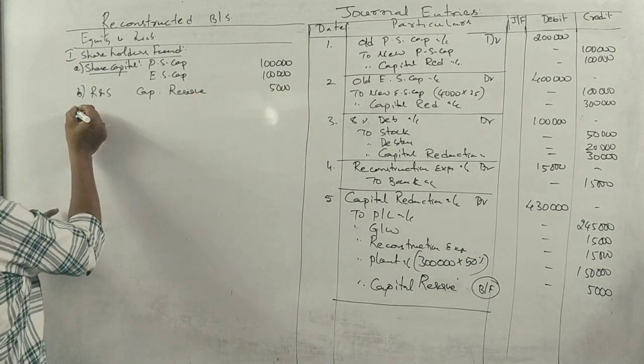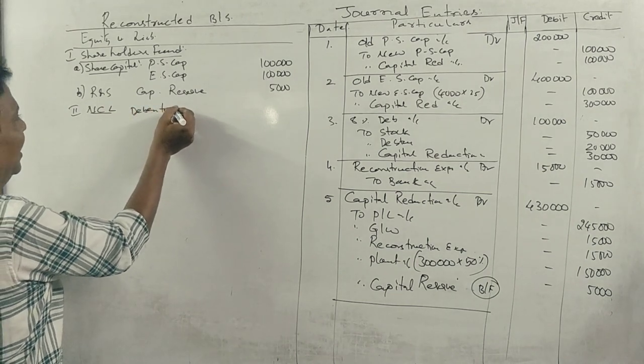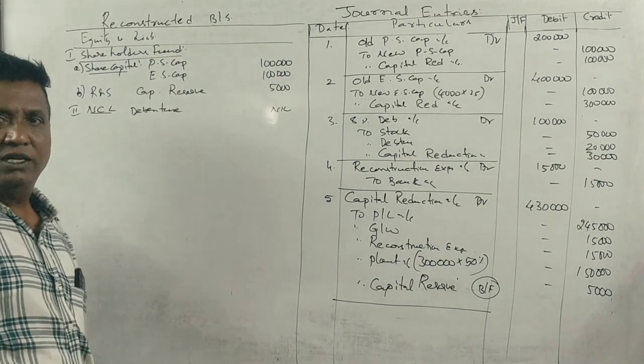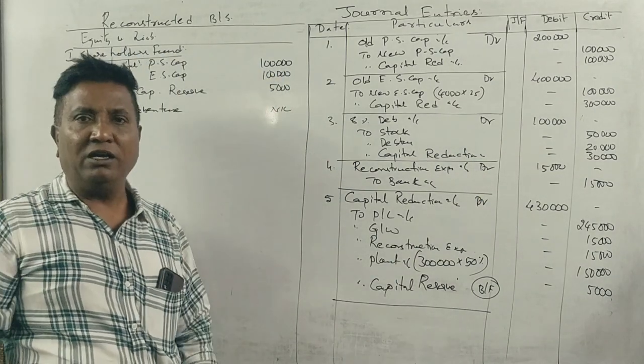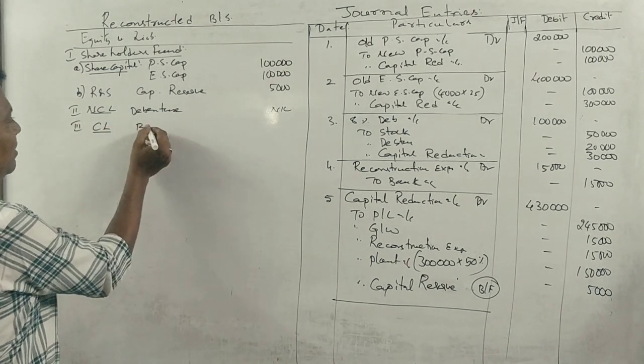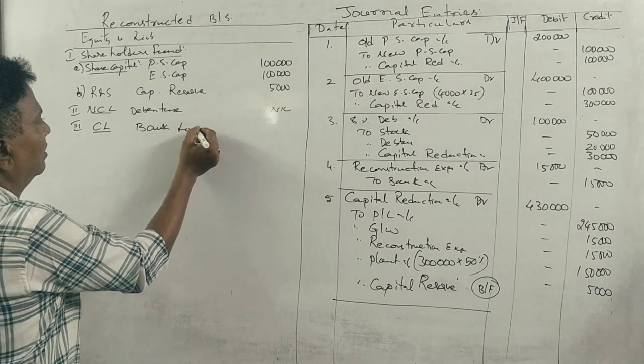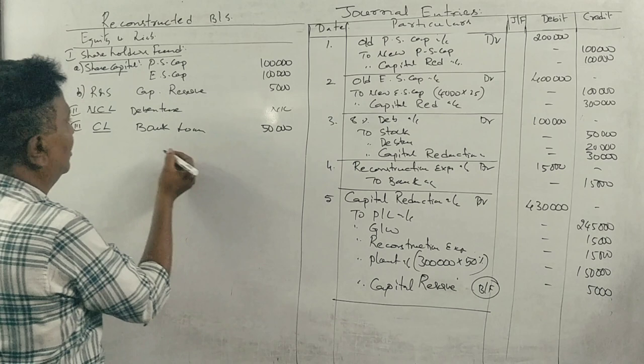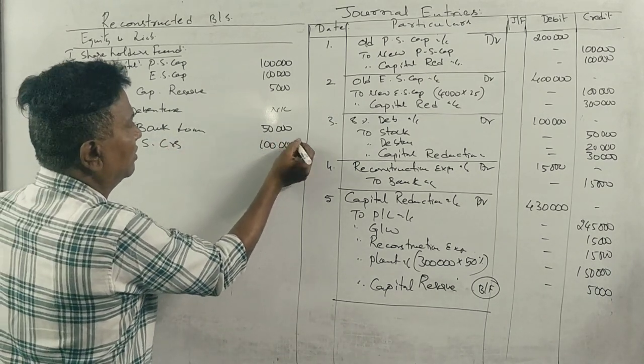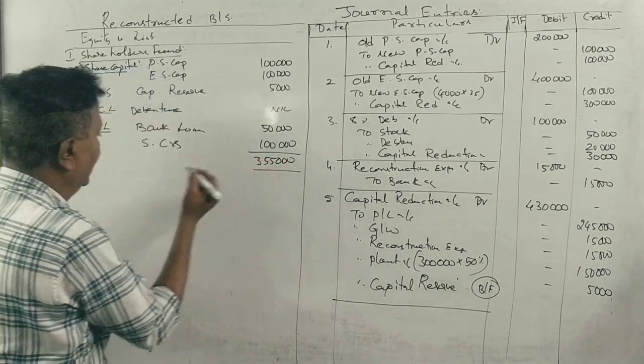Under current liabilities: bank loan and creditors. Total current liabilities.